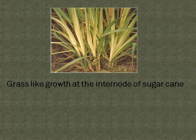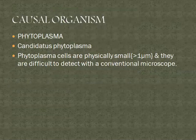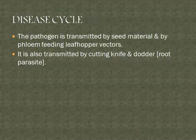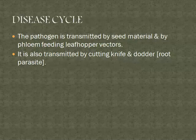This symptomology is common for phytoplasma diseases. The causal organism is phytoplasma, specifically Candidatus phytoplasma, which is very important for grassy shoot of sugarcane. Phytoplasma cells are very small — less than one micron — and are difficult to detect with a conventional microscope. The pathogen is transmitted by seed materials, and phloem-feeding leafhoppers are considered vectors in disease transmission. It is also transmitted by cutting knives and dodders, which are angiospermic root parasites.